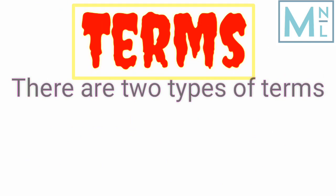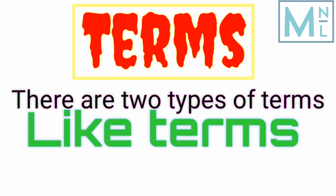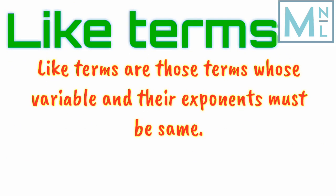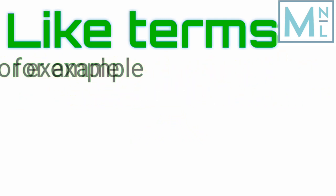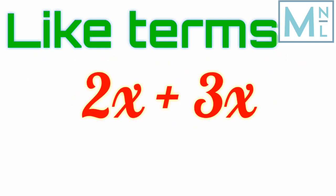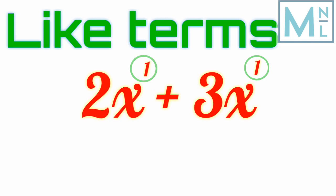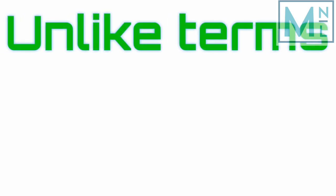Terms also have two types: like terms and unlike terms. Like terms are terms in which the variable and its exponent are the same. For example, 2x plus 3x — both terms have the same variable x and the same power, so these are like terms.